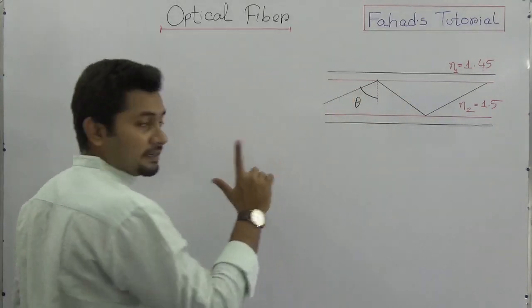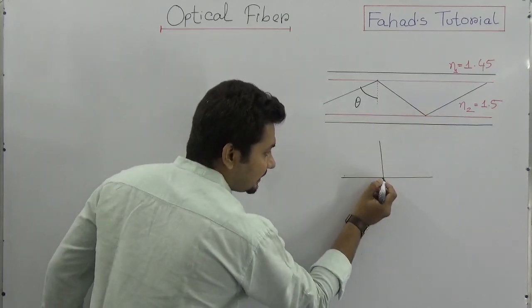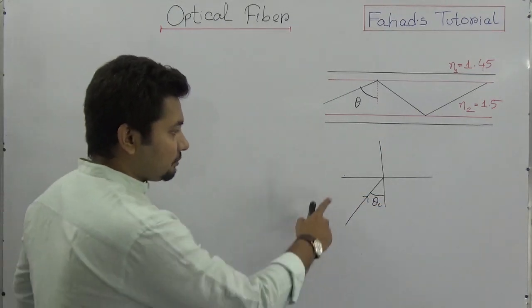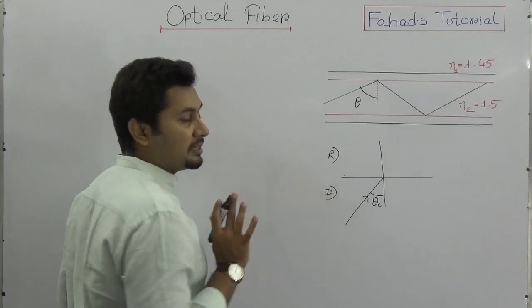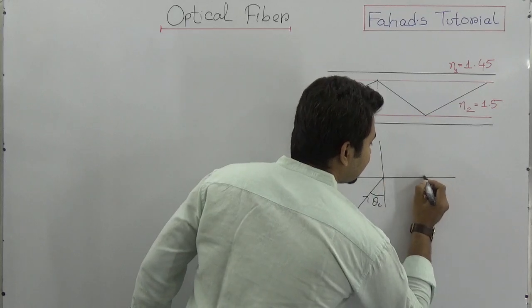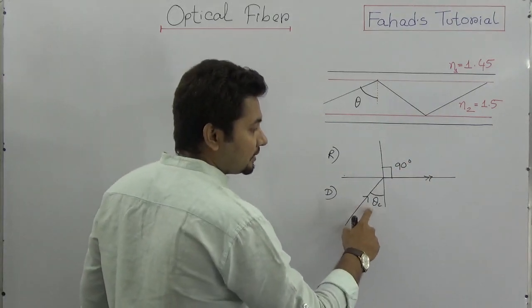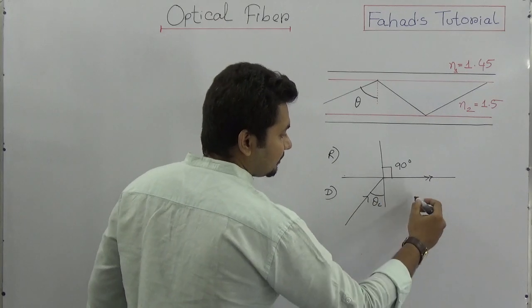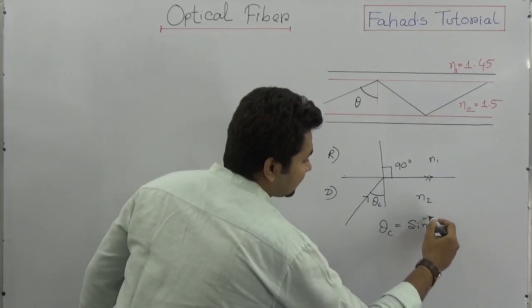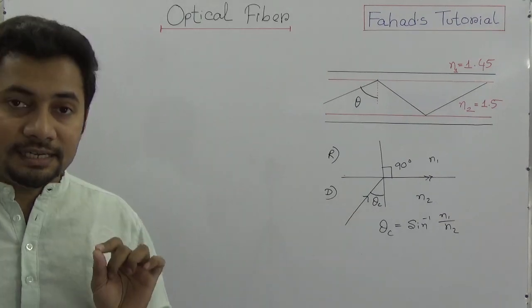When light travels from a denser medium to a rarer medium, the angle formed is known as the critical angle. This is the denser medium and this is the rarer medium. We know that the critical angle forms in the denser medium, so when the angle is theta c, the angle of refraction is 90 degrees. For that reason, sine theta c equals n2 over n1, and theta c is sine inverse of n1 over n2.